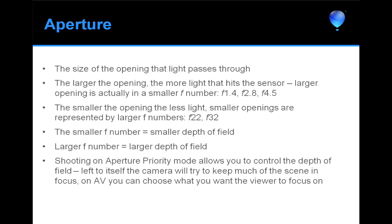To control the f-number, shoot on Aperture Priority mode (AV). This lets you set the aperture and the camera takes care of everything else — it figures out how much time it needs to get the right amount of light on the sensor for a proper exposure. I shoot most of the time on AV when I'm going around as a tourist, because I generally want to control my depth of field.